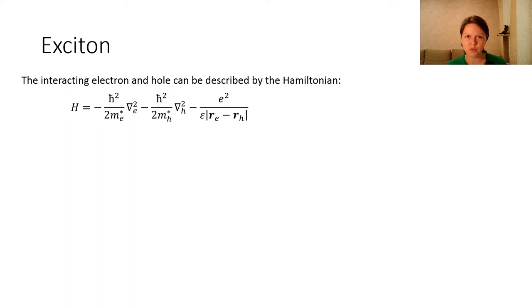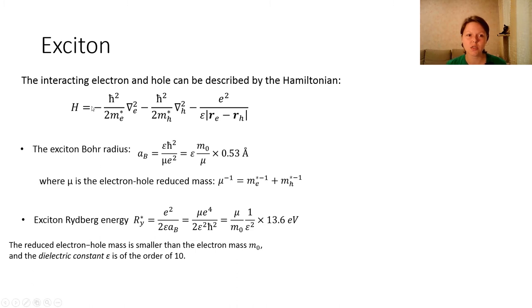The differences between these two cases are the following: first, we are using the mass of the electron and the mass of the hole instead of the masses of electron and proton. Second, we have the dielectric constant of the crystal that is not equal to unity anymore.